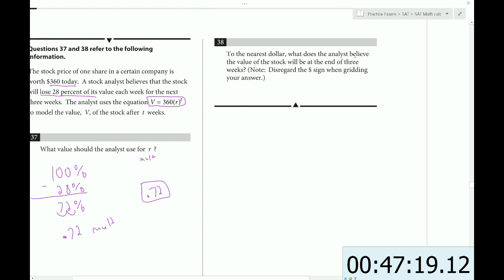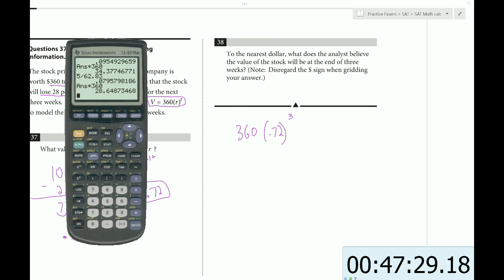To the nearest dollar, what does the analyst believe the value of the stock will be at the end of three weeks? So now we would use 360 times 0.72 to the third. So we can grab our calculator. 360 times 0.72 to the third.